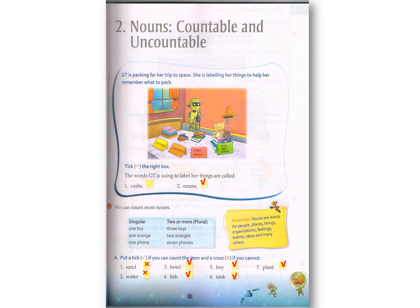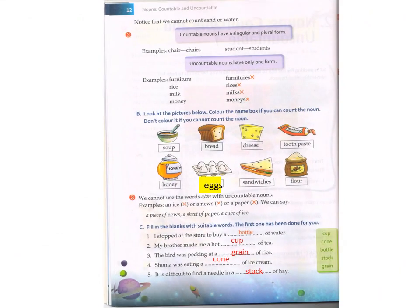Here, A1: put a tick mark if you can count the item and a cross if you cannot. Sand and water — both come under uncountable nouns. Bowl: we can count them. Fish, boy, tank, plant — these all come under countable nouns, we can count them easily. Dear students, remember that always sand and water come under uncountable nouns. We cannot count sand or water, so they come under uncountable nouns.